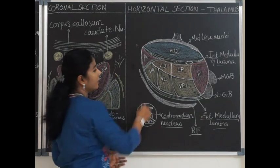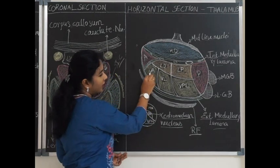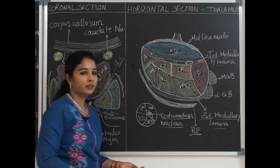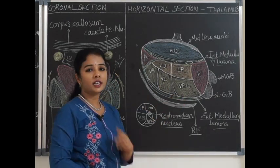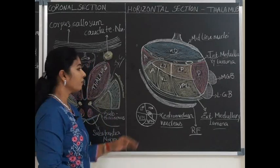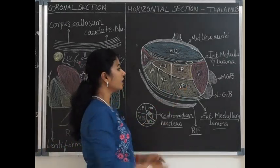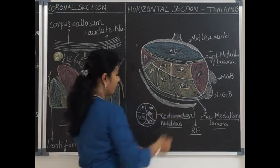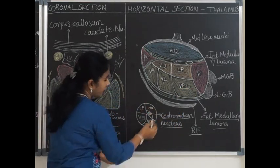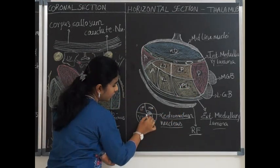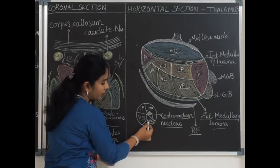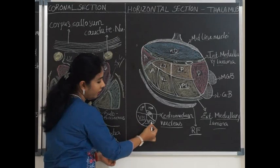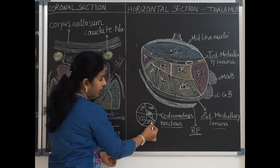The ventral tier is formed by ventral anterior, ventral lateral and ventral posterior nuclei. The ventral posterior nucleus has two parts: the ventral posterior lateral nucleus on the lateral side, and a nucleus deep to it called the ventral posterior medial nucleus.